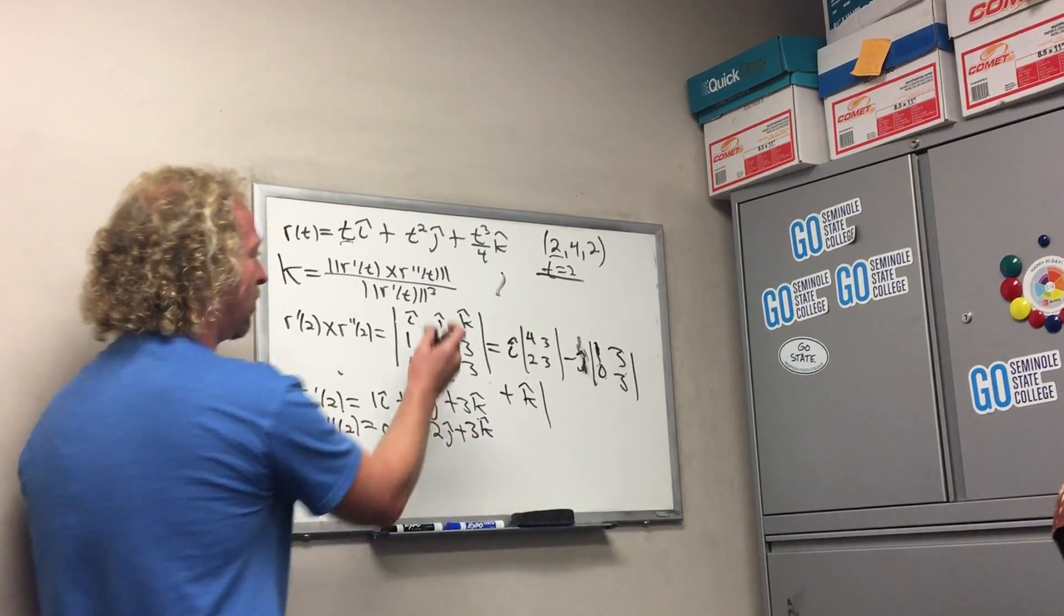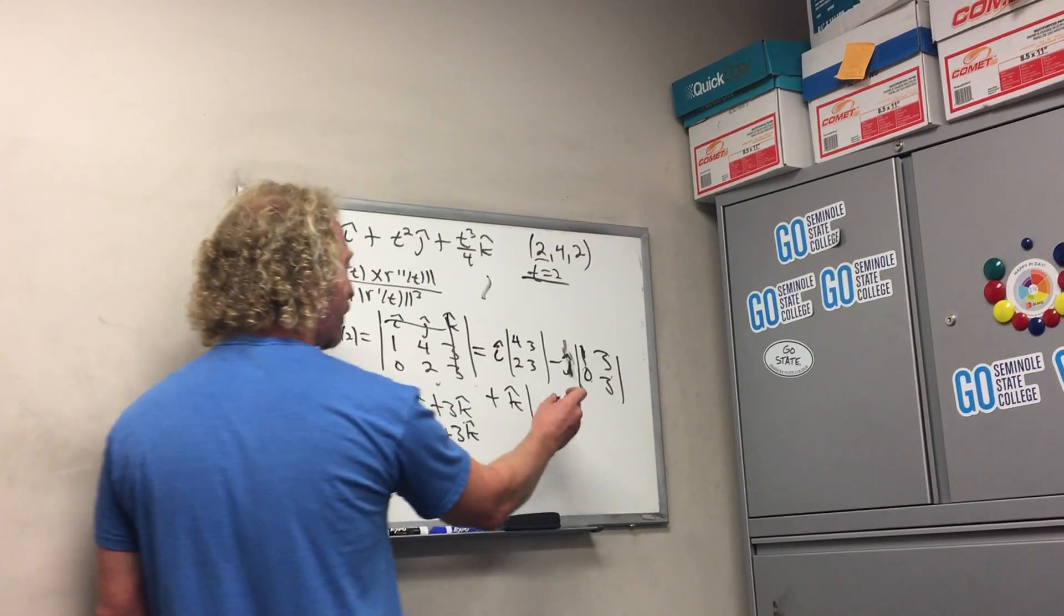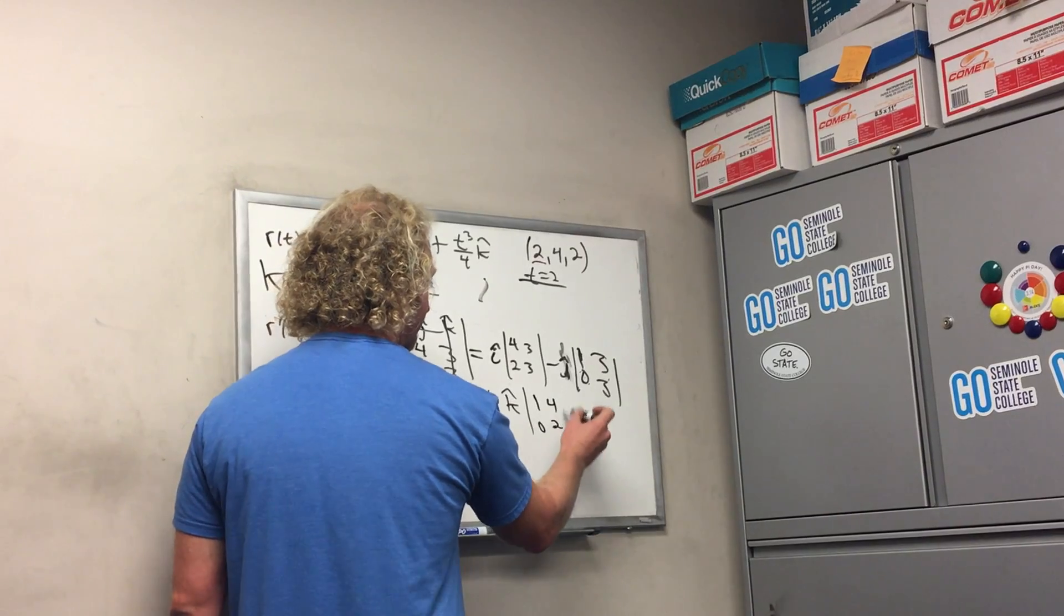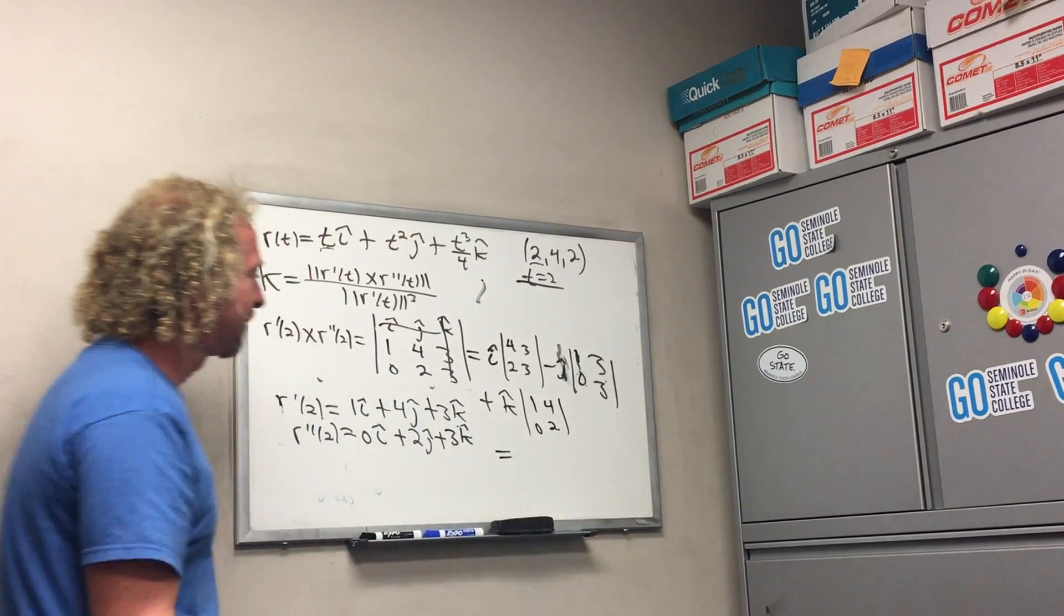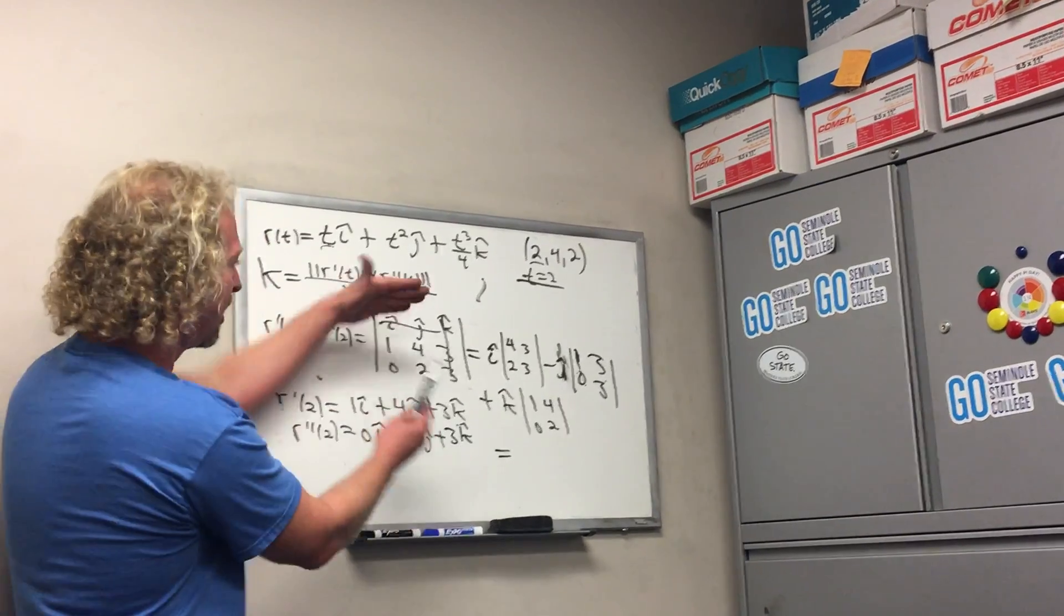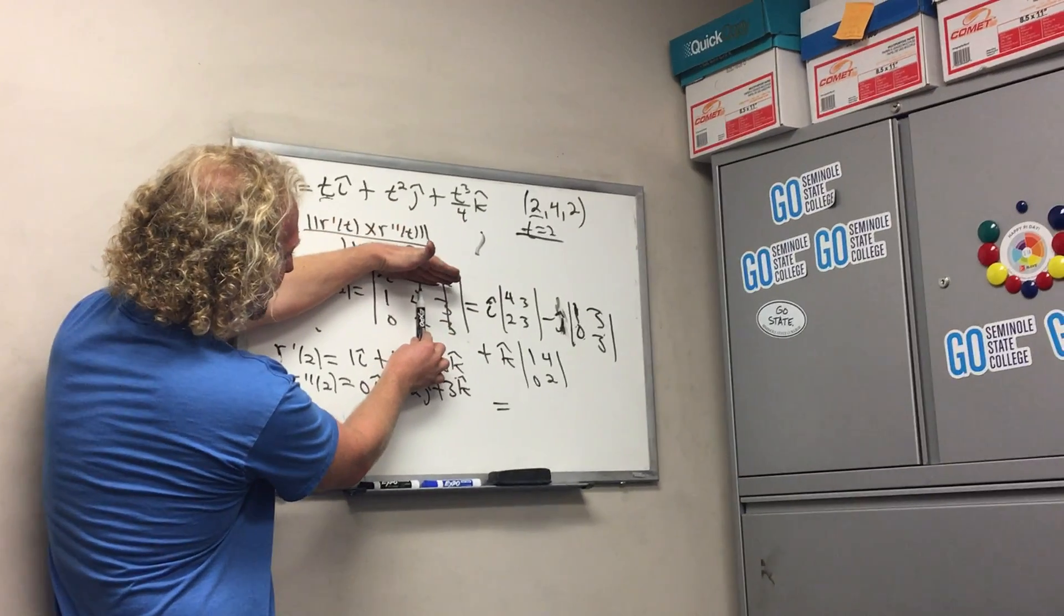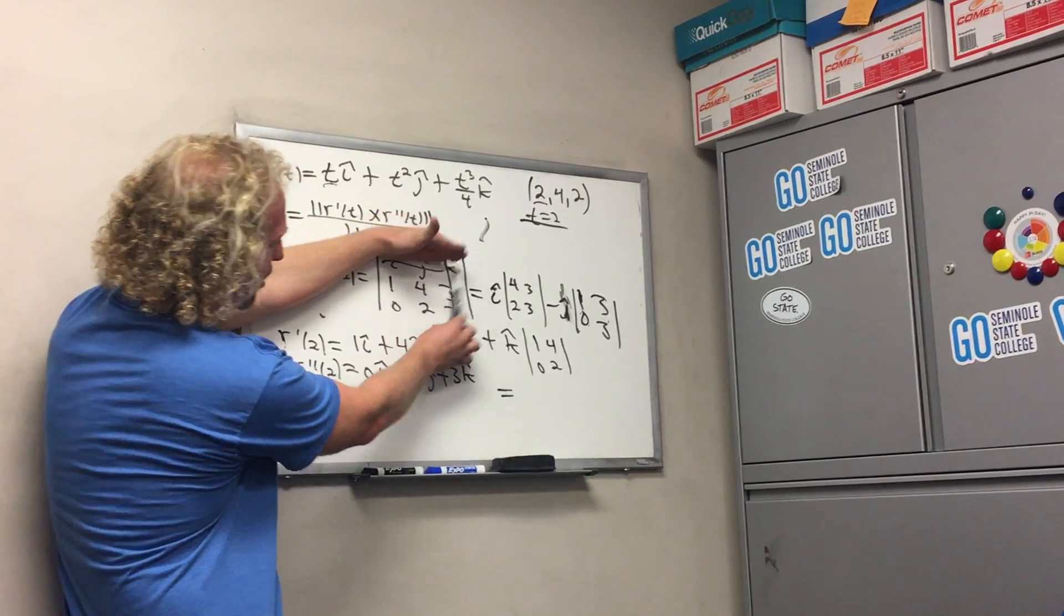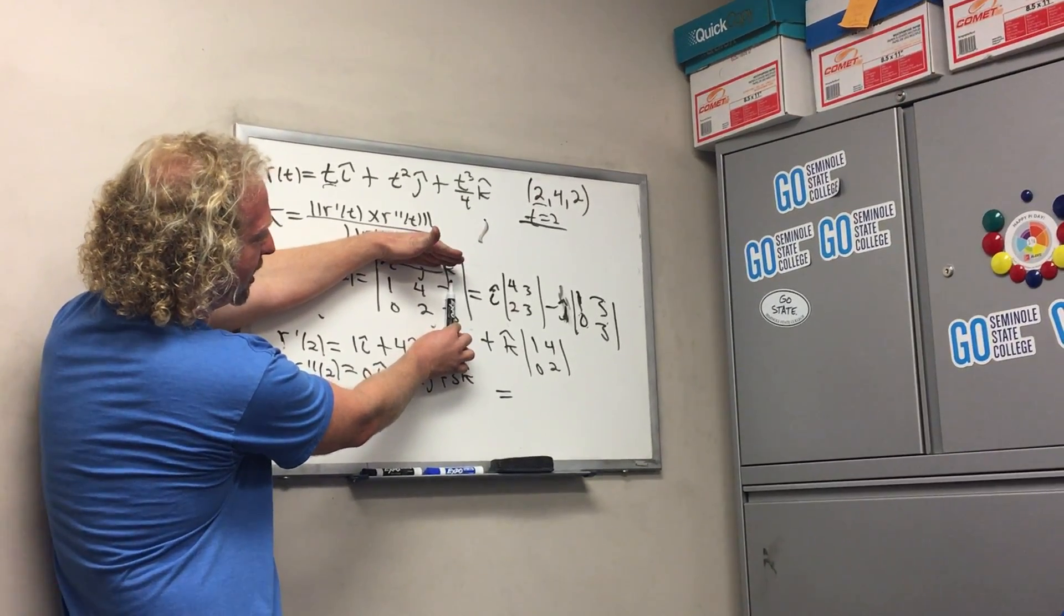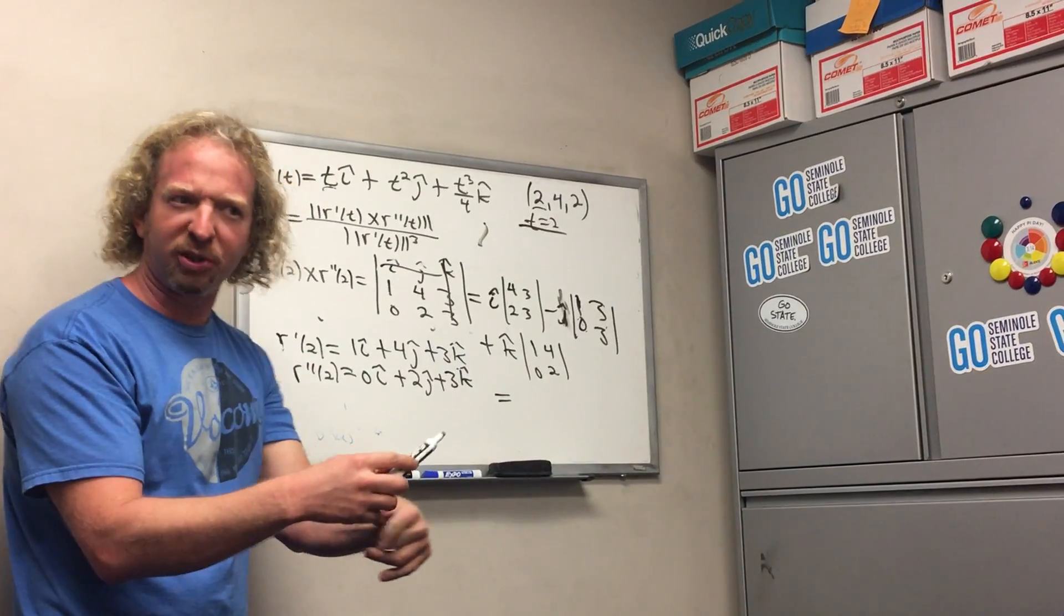Plus k hat. And then I'm just going to use a marker now. So 1, 4, 0, 2. Okay, so we did the cross product. So it's 4, 3, 2, 3, and it's plus 1, 0, 3, 3, and it's minus 1, 0, 4, 2. Plus, minus, plus - i, j, k. And then we just do the multiplication.